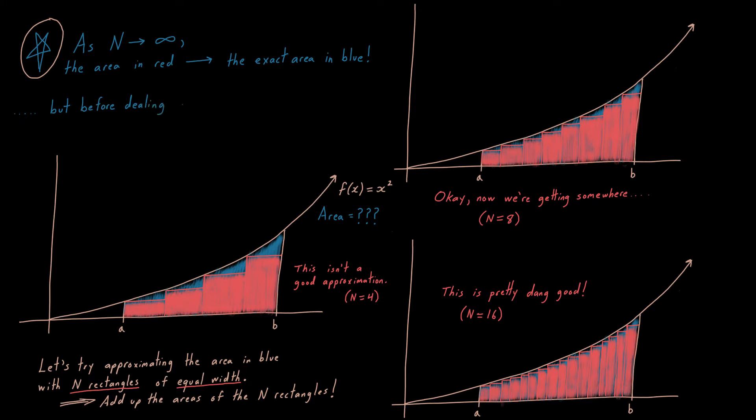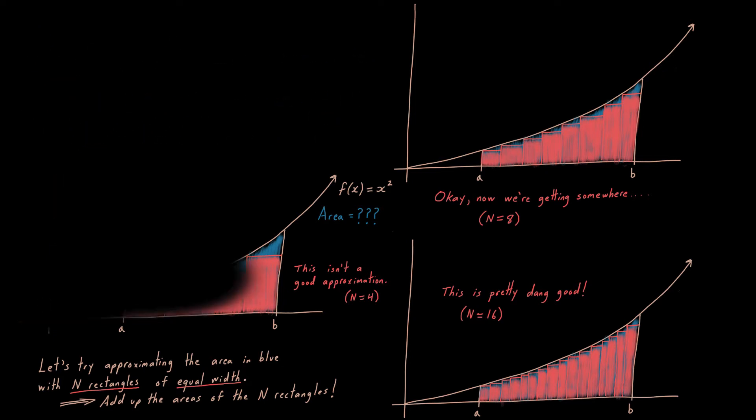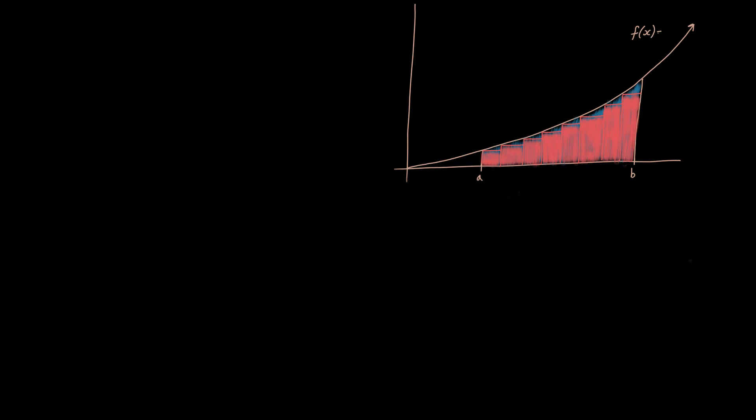Now, before we deal with the tricky calculus-y n approaching infinity case, we should first deal with a simple finite case. First, let's say n equals eight, just to get some proper notation, the appropriate notational apparatus on the table. Again, this graph is the graph of x squared. We're going to let a equal three, b equal eight. That's our starting x value and our final x value, where we're trying to sandwich the graph in between. With that lower and upper bound, I want to approximate the area in blue with the sum of the rectangular areas. And here I've labeled them a1 to a8.